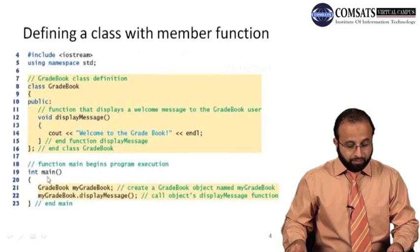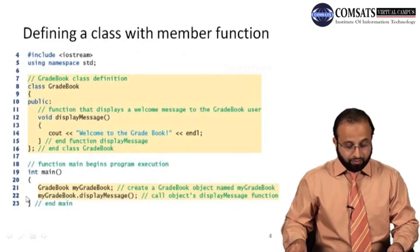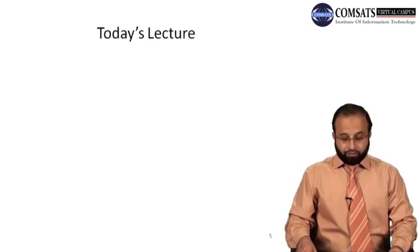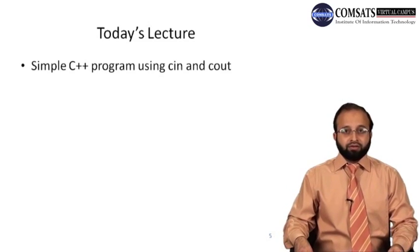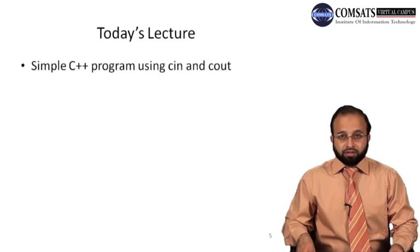In the main function, we create an object 'myGradeBook' of type GradeBook, then call displayMessage with that object. In line 22, myGradeBook is the object of GradeBook class, then we use the dot operator and call displayMessage, which will display 'Welcome to GradeBook' on the screen. In today's lecture, we will write a simple C++ program using cin and cout — entering your name and age, taking input, and displaying it on screen.